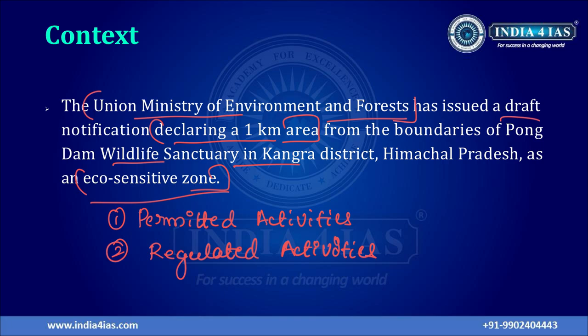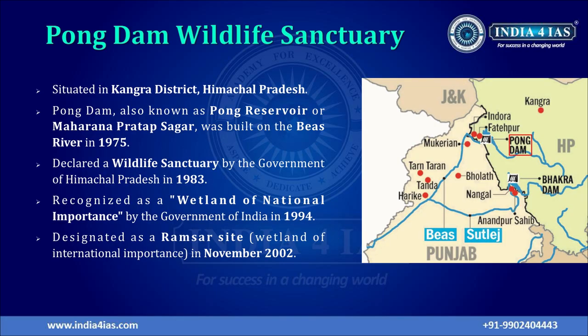Regulated activities within the Eco-Sensitive Zone include felling of trees, establishment of hotels and resorts, commercial use of natural water, erection of electrical cables, and drastic change of agricultural systems. Prohibited activities include commercial mining, industries causing air, water or soil pollution, establishment of major hydroelectric projects, and commercial use of wood.